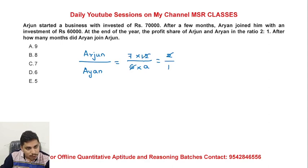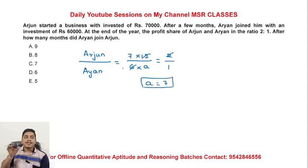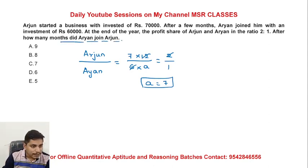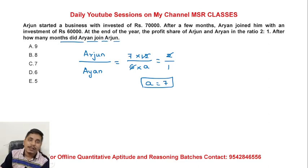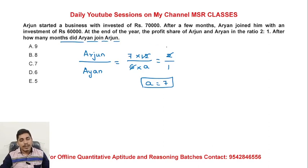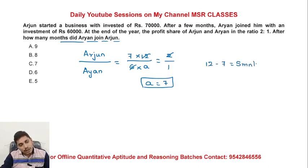6 times 12 is 12 — cancelled. So A value is 7, meaning 7 months were involved in the business. 12 minus 7 equals 5 months. So the partner joined after 5 months.